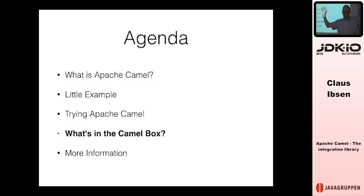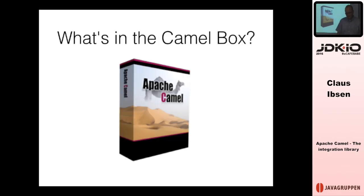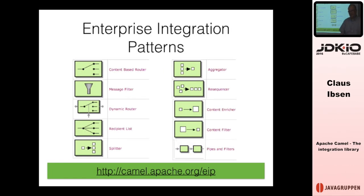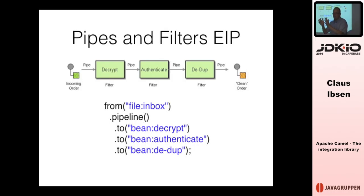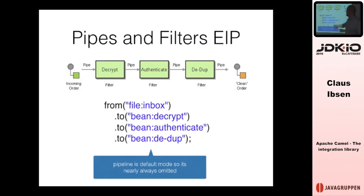What features does Camel have beyond what we've talked about? First and foremost, there are all the enterprise patterns from the EIP book — you can think of Camel as the software implementation of that book. There's the pipes-and-filters pattern, named like the Unix shell concept where each command does one thing well and you pipe the output to the next. The pattern name in Camel is 'pipeline', and it's the default mode: from, to, to, to — the output of decrypt becomes input to authenticate.